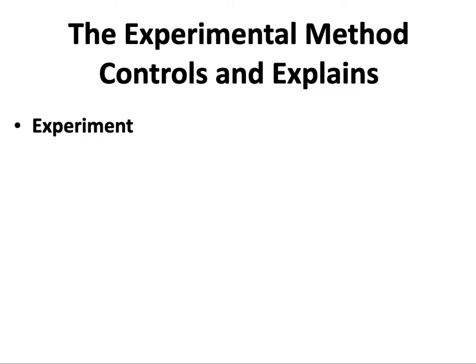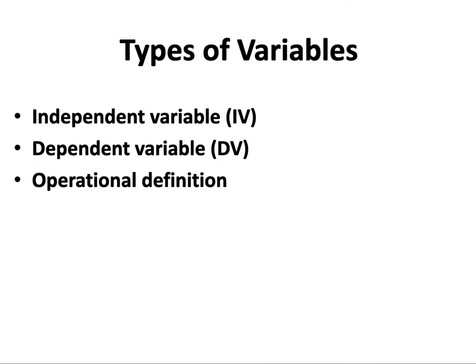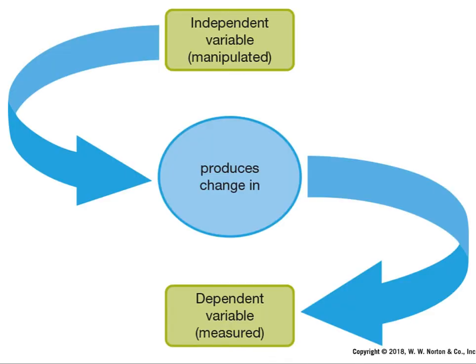The experimental method controls and explains. An experiment is a research method that tests causal hypotheses by manipulating and measuring variables, and allows researchers to test multiple hypotheses to examine and refine their theory. The independent variable (IV) is the variable that gets manipulated; the dependent variable (DV) is the variable that gets measured — it measures the outcome. An operational definition qualifies, describes, and quantifies a variable so that it can be understood objectively. You manipulate the independent variable to produce changes in the dependent variable.